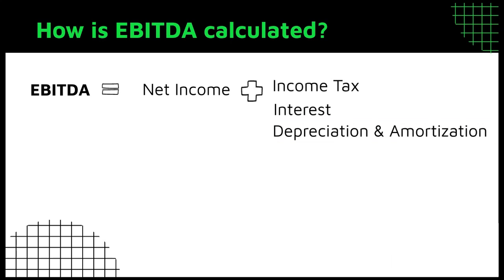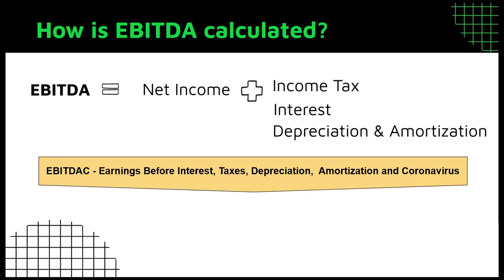AAC was recently introduced to EBITDA to adjust for the impact of the coronavirus pandemic on profitability. This started out as a joke but has been reported by some companies. However, it is uncertain that investors will accept it as a performance measure going forward. What are your thoughts about it? Please share in the comments below.